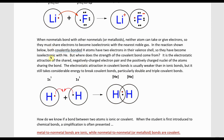When nonmetals bond with other nonmetals or metalloids, neither atom can take or give electrons, so they must share electrons to become isoelectronic with the nearest noble gas. In a covalent bond, both hydrogen atoms have two electrons in their valence shell, making them isoelectronic with helium. The strength of the covalent bond comes from the electrostatic attraction of the shared, negatively charged electron pair between the positively charged nuclei. This is still electrostatic attraction, but typically weaker than in ionic bonds, though it still takes considerable energy to break covalent bonds — particularly double and triple bonds.